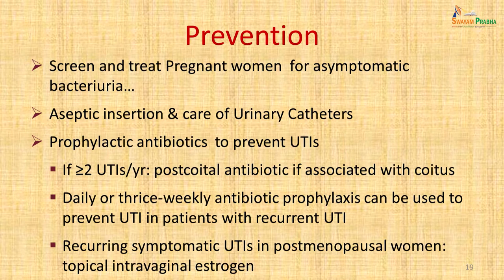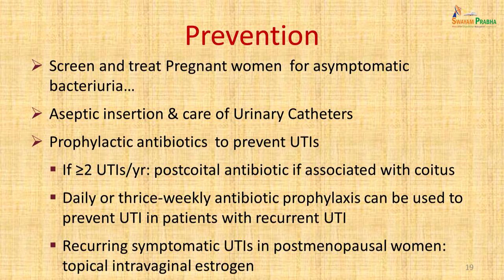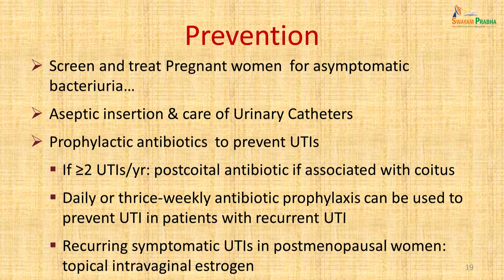Prevention of urinary tract infection is important, especially in pregnant women, as it can cause adverse events. One must screen and treat all pregnant women for asymptomatic bacteriuria. Aseptic insertion and care of urinary catheters prevents a major component of catheter-associated UTIs. Prophylactic antibiotics have some role if more than two UTIs occur, particularly postcoital. Daily or thrice-weekly antibiotic prophylaxis can be used for recurrent UTI. Topical intravaginal estrogens can treat recurring UTI in postmenopausal women.